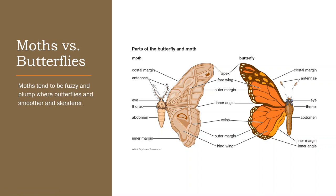Moths versus butterflies — here are some other differences. Moths tend to be fuzzy and plump. You can see this moth right here has what looks like fur on him and he's a bit plumper, whereas our butterfly here is a bit more slender and almost smooth.